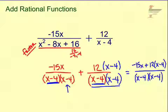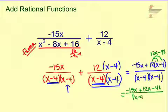Now, often in these, we're going to have to clean up the numerator a little bit. For example, we can distribute this to get 12x minus 48. So if we rewrite this, negative 15x plus 12x minus 48 over x minus 4, x minus 4.